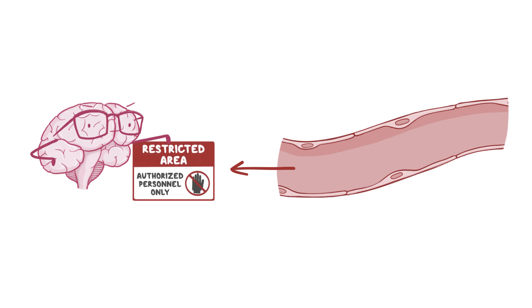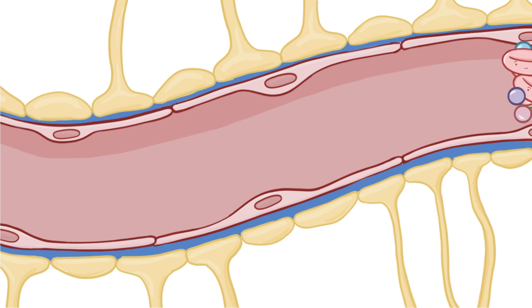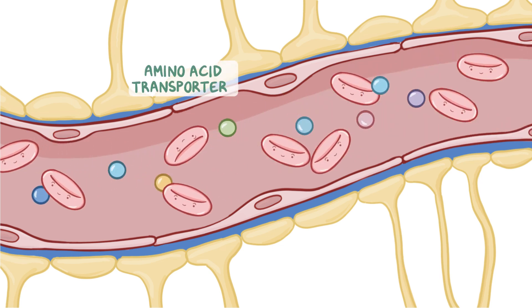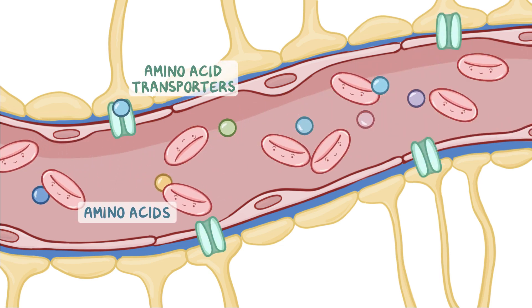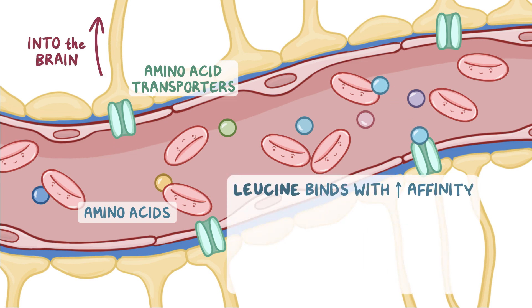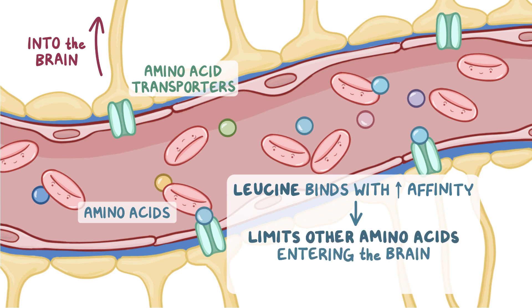There is a highly selective barrier between the brain tissue and blood vessels called the blood-brain barrier. The blood-brain barrier has amino acid transporters that allow a limited amount of amino acids to cross from the blood into the brain. Leucine binds with higher affinity to these transporters than other amino acids, so they end up occupying most of the transporters. This limits the amount of other amino acids that can enter the brain — some of these, like tyrosine, tryptophan, and threonine, are used for the synthesis of neurotransmitters like dopamine and serotonin.